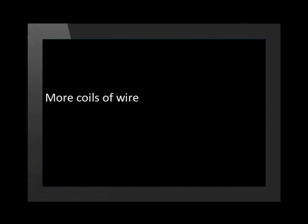How can we make these motors more powerful to do amazing things like drive cars and electric drilling machines? These motors use a coil of wire with electricity and permanent magnets, so when we change these things we can make a motor more powerful. More coils of wire, higher current, and stronger magnets are all ways that the motor can be made more powerful and produce more power.